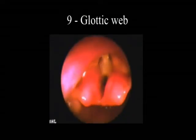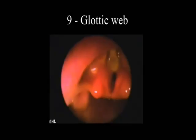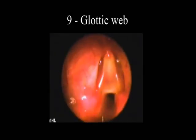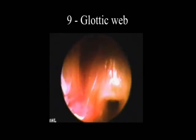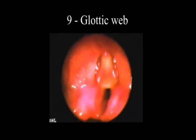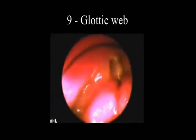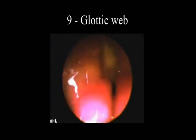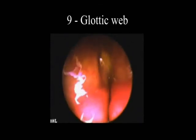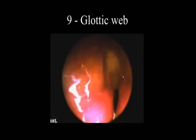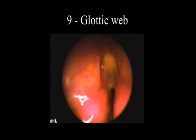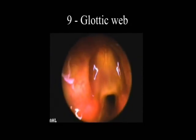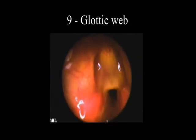Anterior glottic web presents with weak, soft, or absent cry since birth. Stridor is rare and may be biphasic, worsening with exertion. Evaluation covers vocal mobility, subglottic lumen, thickness, and firmness of the web. Treatment is division of the web with laser or cold instruments.